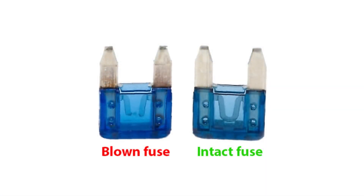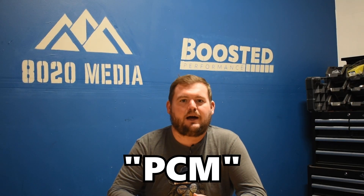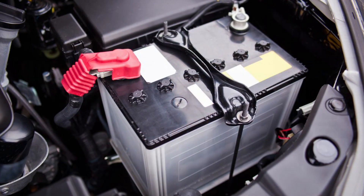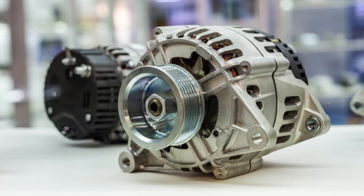Look for any blown fuses, and in particular any fuses that control a control module — so anything labeled like ECM, PCM, TCM, ABS module, etc. Then check your battery voltage and make sure that your alternator is working properly. If all of that checks out, then moving on to the next steps is where it can get a lot more complicated.